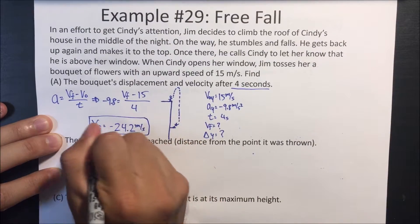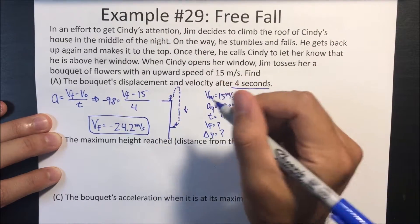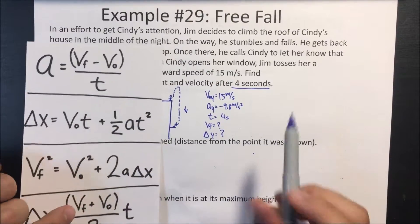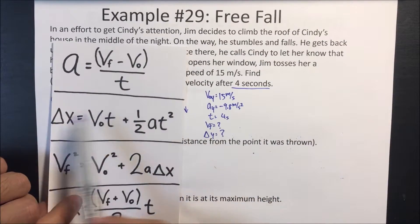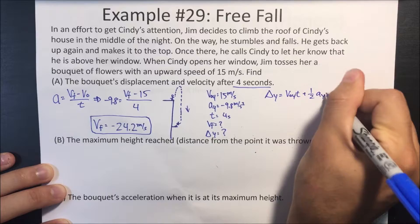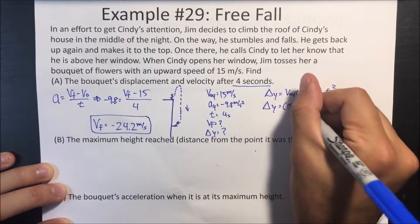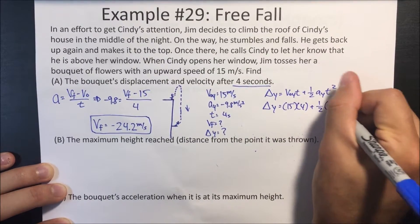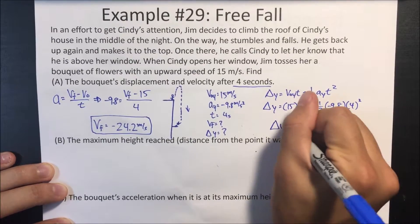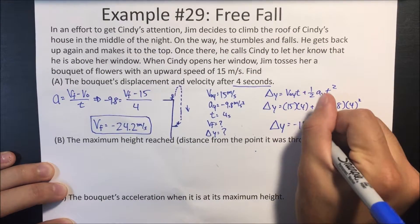So we know after 4 seconds, even though he tossed it up, it is on its downward path. Now let's find displacement. The formula is displacement in Y equals V initial Y times T plus one half A_Y times T squared. Plugging in: displacement equals 15 times 4 plus one half times negative 9.8 times 4 squared, and we find the answer is negative 18.4 meters.